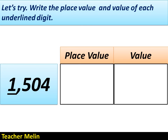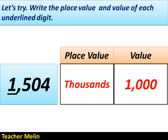Another number: 1504. The underlined digit is 1. What is the place value of 1? The correct answer is thousands. And what is the value of 1? The correct answer is one thousand.